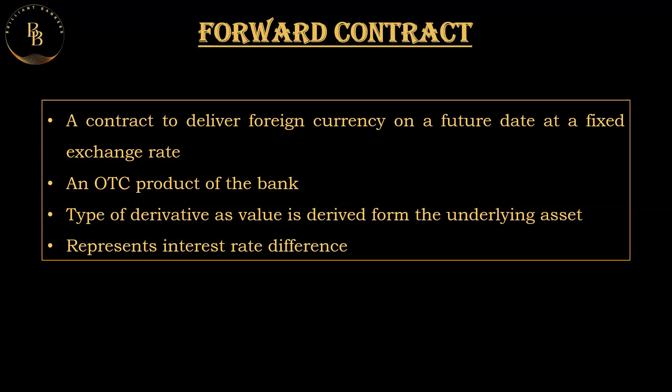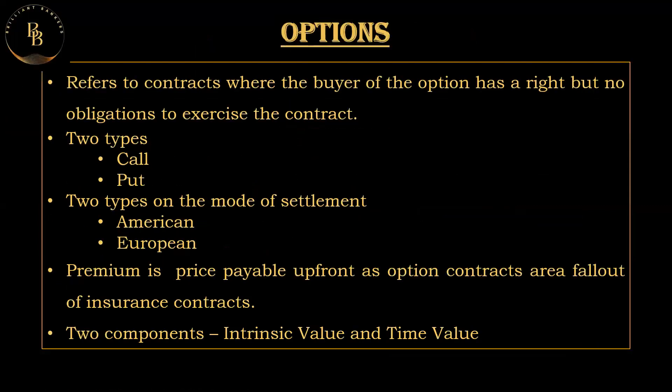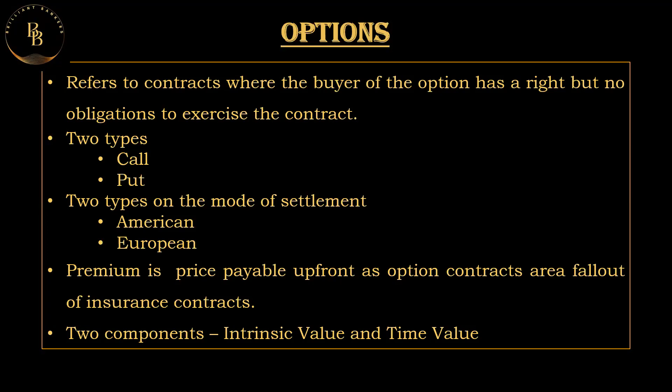Options are financial instruments that give the holder the right — not an obligation — to buy or sell an underlying asset at a predetermined price, called the strike price, before or at the expiration date. It refers to a contract where the buyer of the option has the right but not the obligation to exercise the contract to buy or sell a particular asset at a particular strike price.